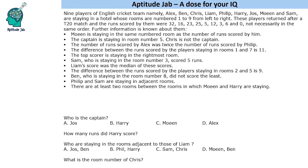Hello everyone, welcome to Aptitude Jab. This is a set based on arrangement. 9 players of the English cricket team are staying in a hotel whose rooms are numbered 1 to 9 from left to right. These players returned after a match and the runs scored by them are given, not necessarily in respective order. Some information is given about them and we need to find out where these people are staying and how many runs they scored. Since this is an arrangement-based problem and the rooms are numbered in a sequence, let us use the first row as the room number and then fill in the player name and runs scored by them.